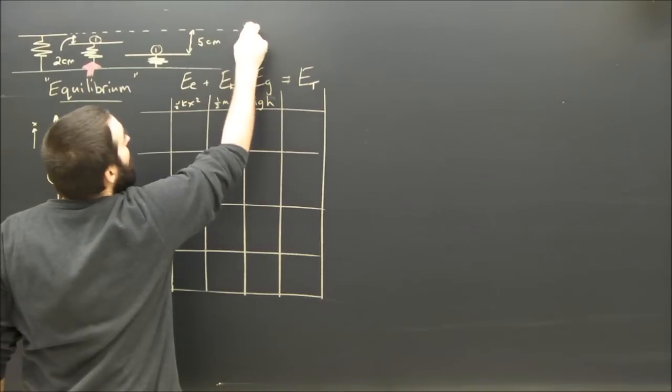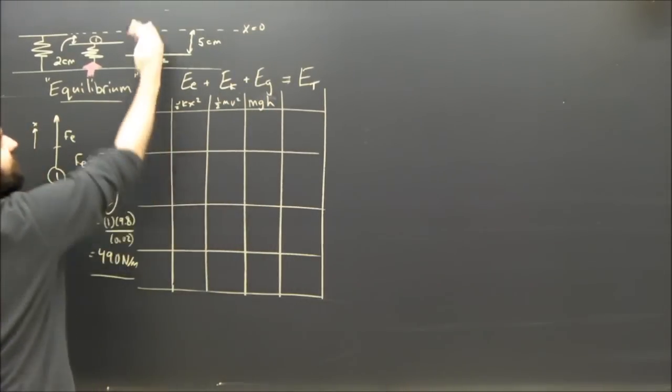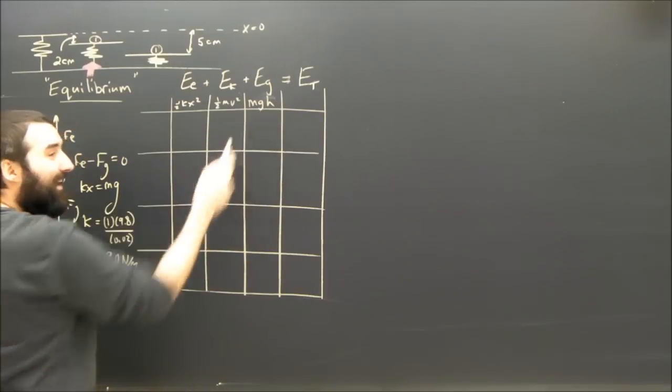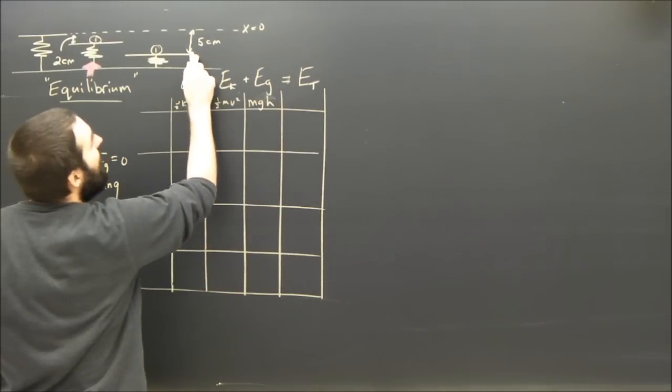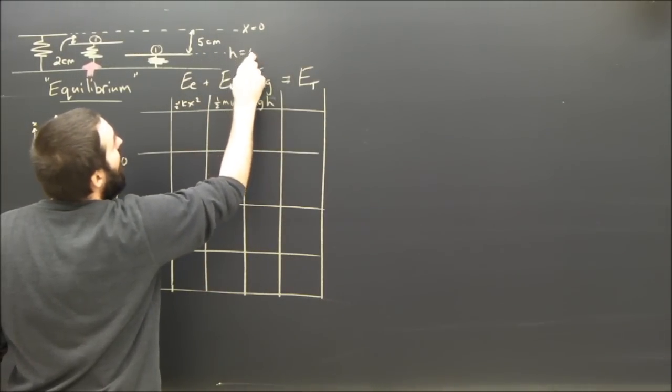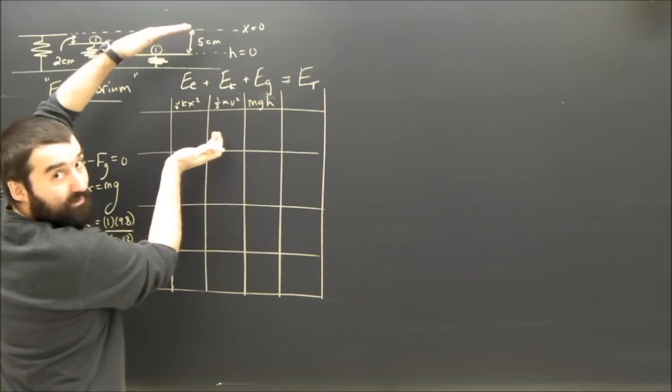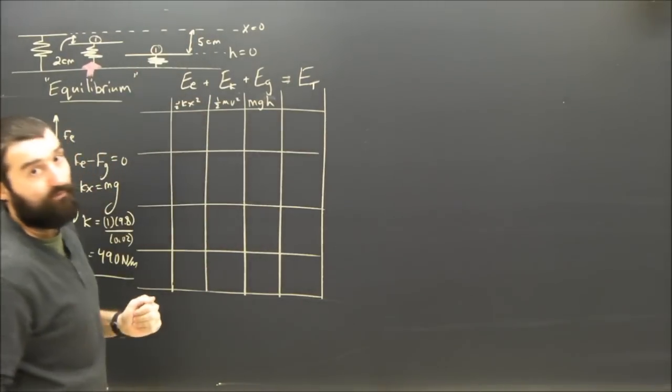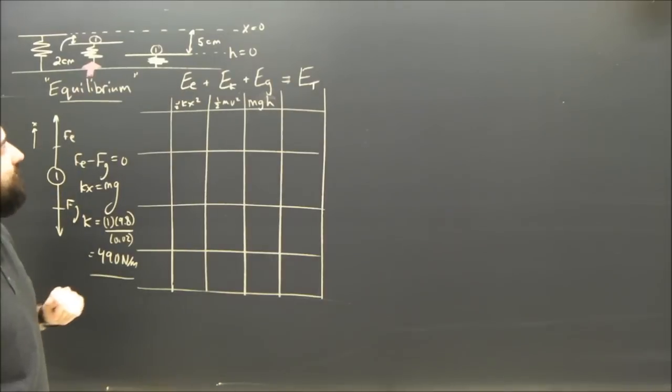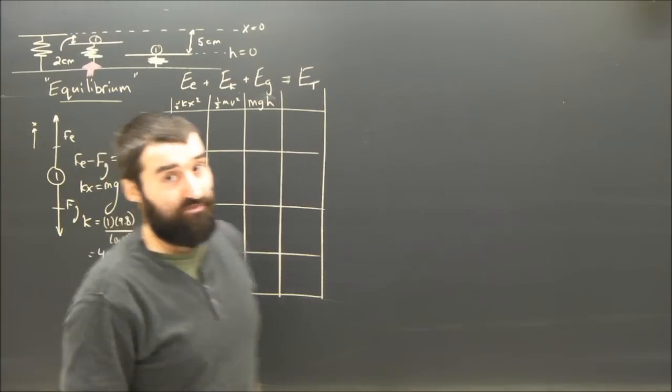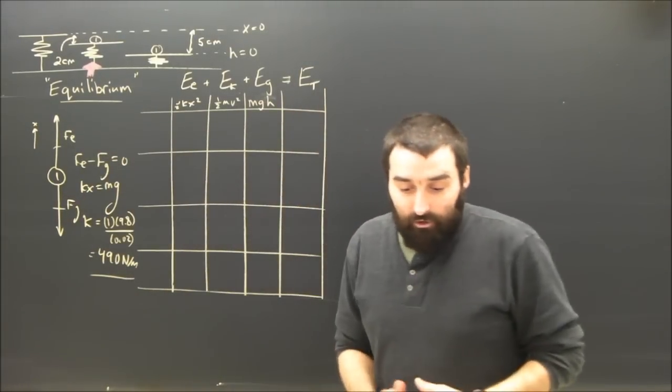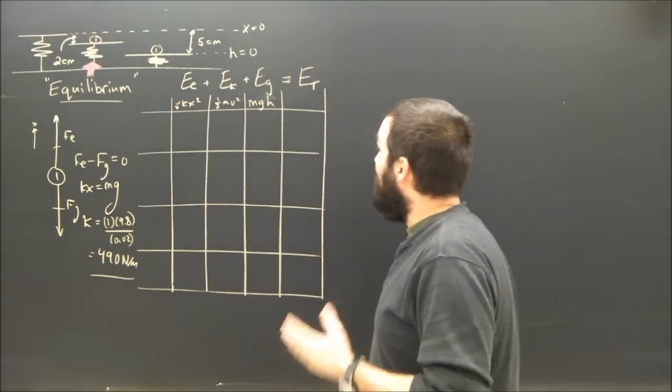Remember, X is zero when the string is unstretched. What about H? Well, that's sort of up to you. I'm going to call H zero at the bottom, where the spring is the most compressed. I'm going to call that height of zero. So everything else will be relative to that. It's important that I am clear about that and consistent, otherwise I don't stand much to a chance to get your question right, even though, especially part A, is quite easy.